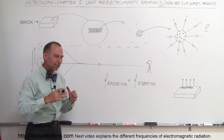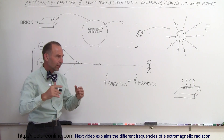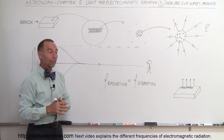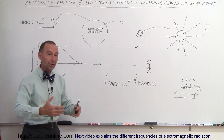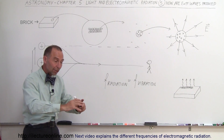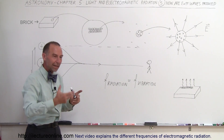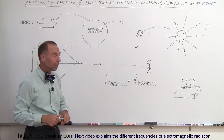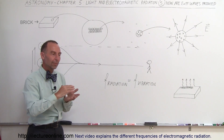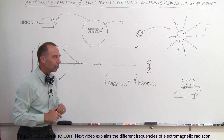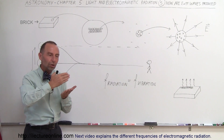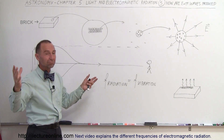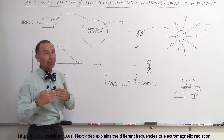If an object gets hotter and hotter, eventually the frequency of vibration of the atoms becomes so high that they will begin to emanate visible light. For example, if you take a piece of metal and put it in fire, it gets hotter and hotter, and eventually the metal begins to glow — first a reddish color, then orangey, and if you make it even hotter, like in a steel mill where they melt steel, the metal becomes white hot, because it then shows all the various colors of the rainbow together. Eventually, if it gets hot enough, it will actually have a bluish color.